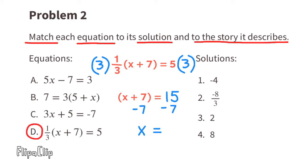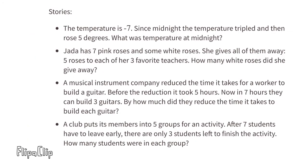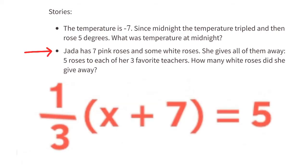Subtracting 7 from both sides gives x equals 8. The solution for equation d is the fourth solution, 8. The story equation d describes is the roses story: Jada has 7 pink roses — the plus 7 inside the parentheses — and some white roses, an unknown number represented by x. She gave all of them away equally to each of her 3 favorite teachers — represented by the one third outside the parentheses — giving 5 roses to each teacher, represented by equals 5.